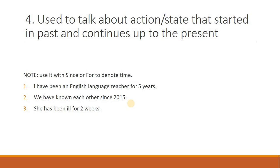ایک اور اہم بات — بہت سے students غلطی کرتے ہیں اور کہتے ہیں: she is ill for two weeks — یہ غلط ہے۔ She is ill for two weeks کا مطلب ہے وہ دو ہفتے کے لیے بیمار ہے — یعنی present سے future تک۔ لیکن she has been ill for two weeks کا مطلب ہے ماضی سے کام شروع ہوا اور present تک جاری ہے — یہ فرق یاد رکھیں۔